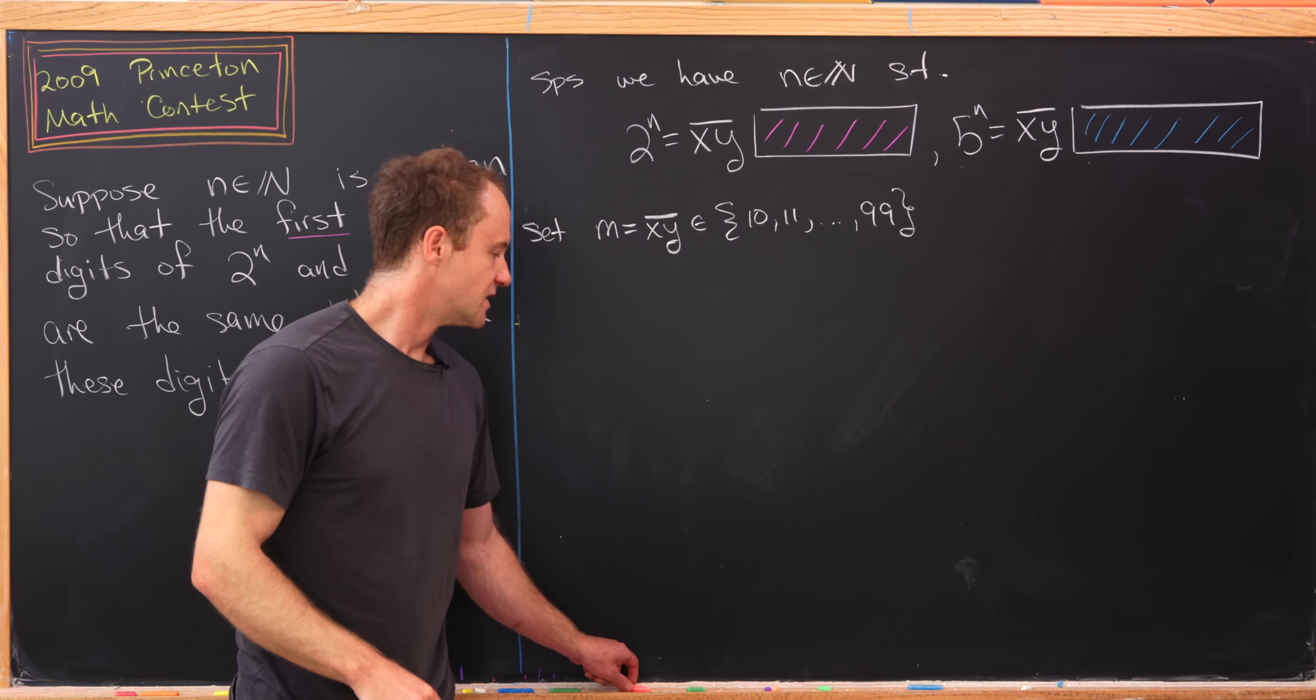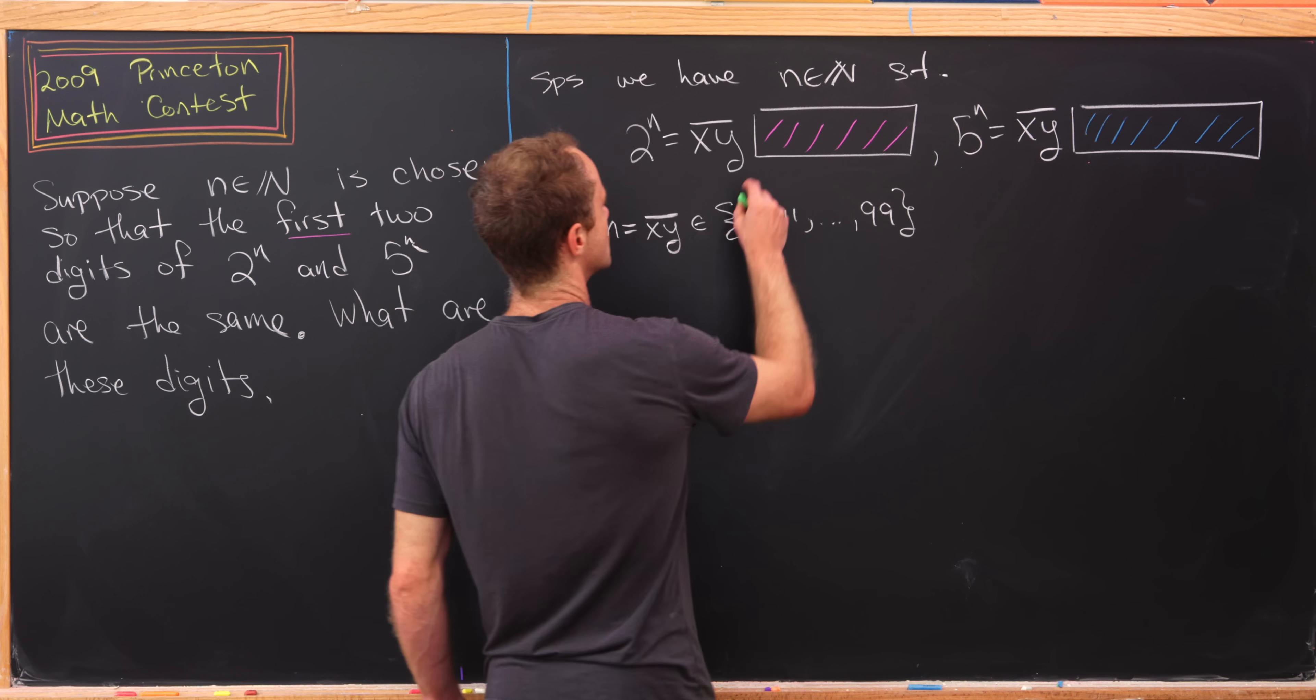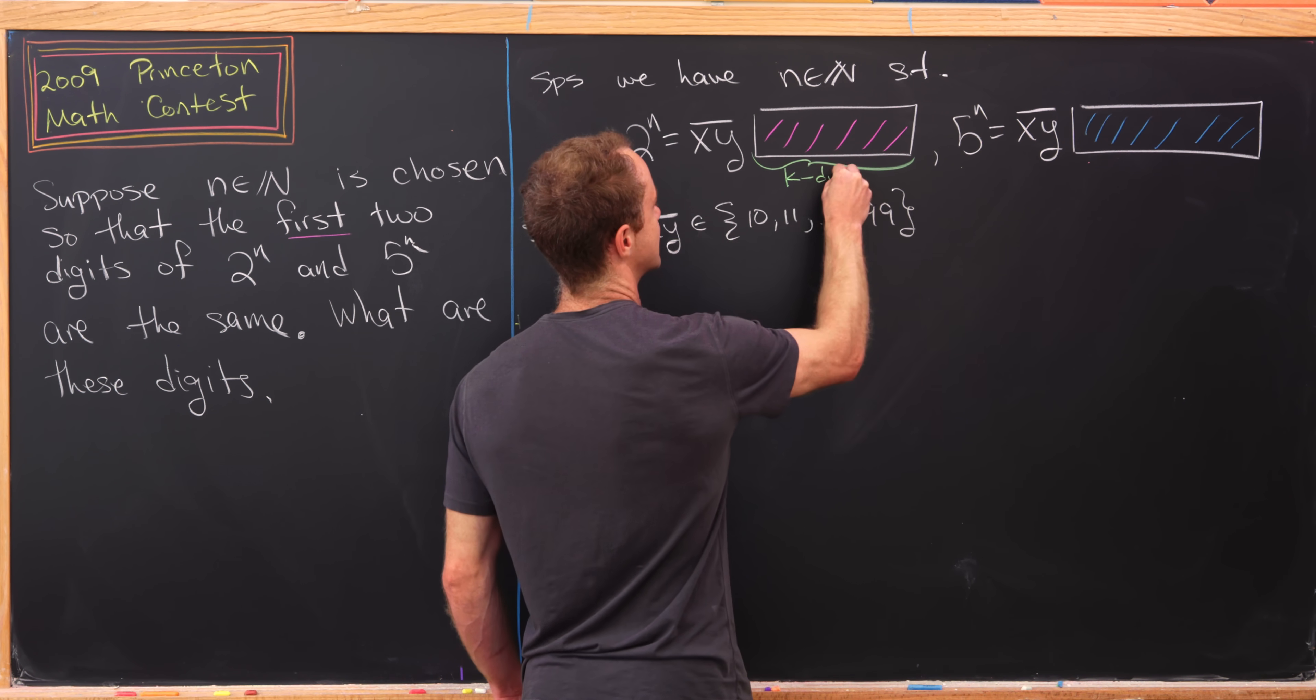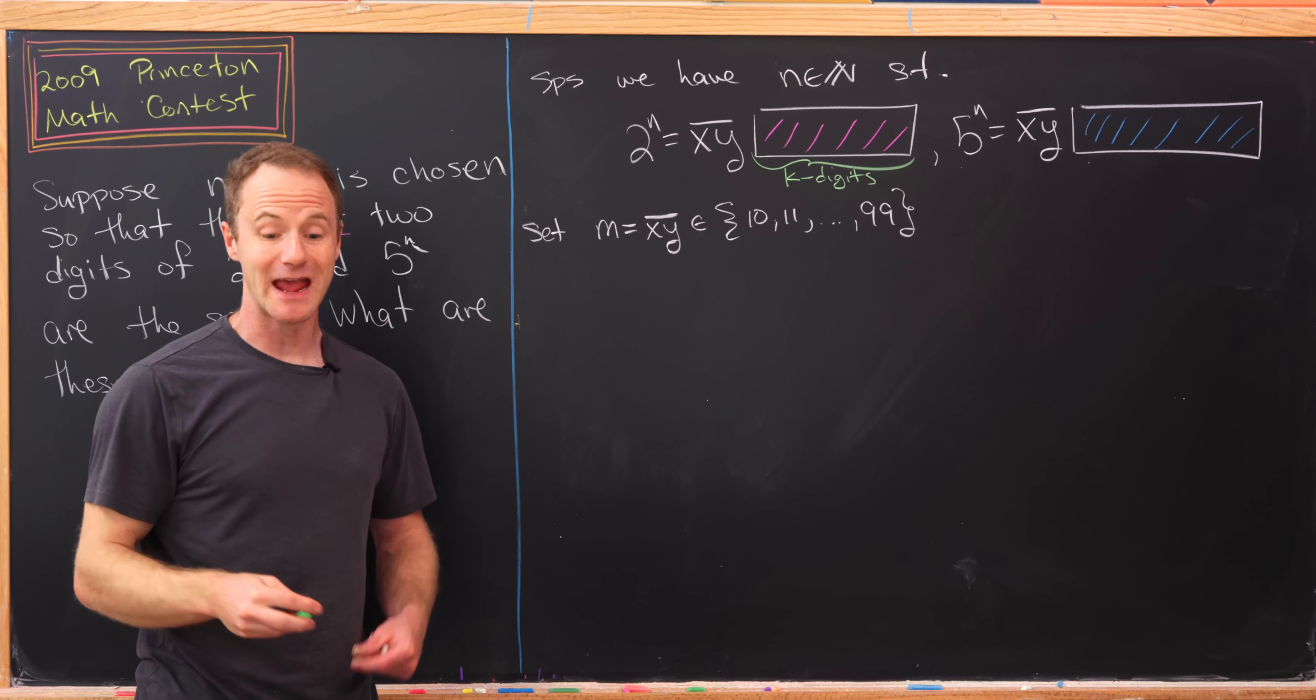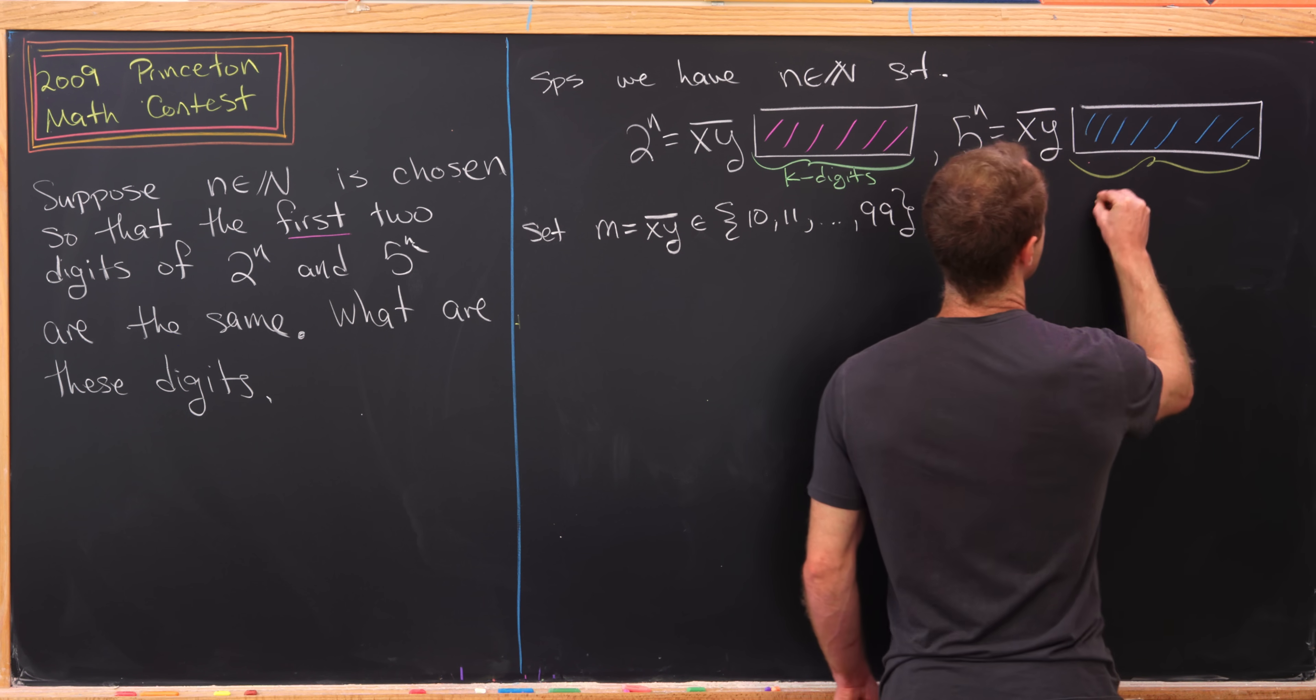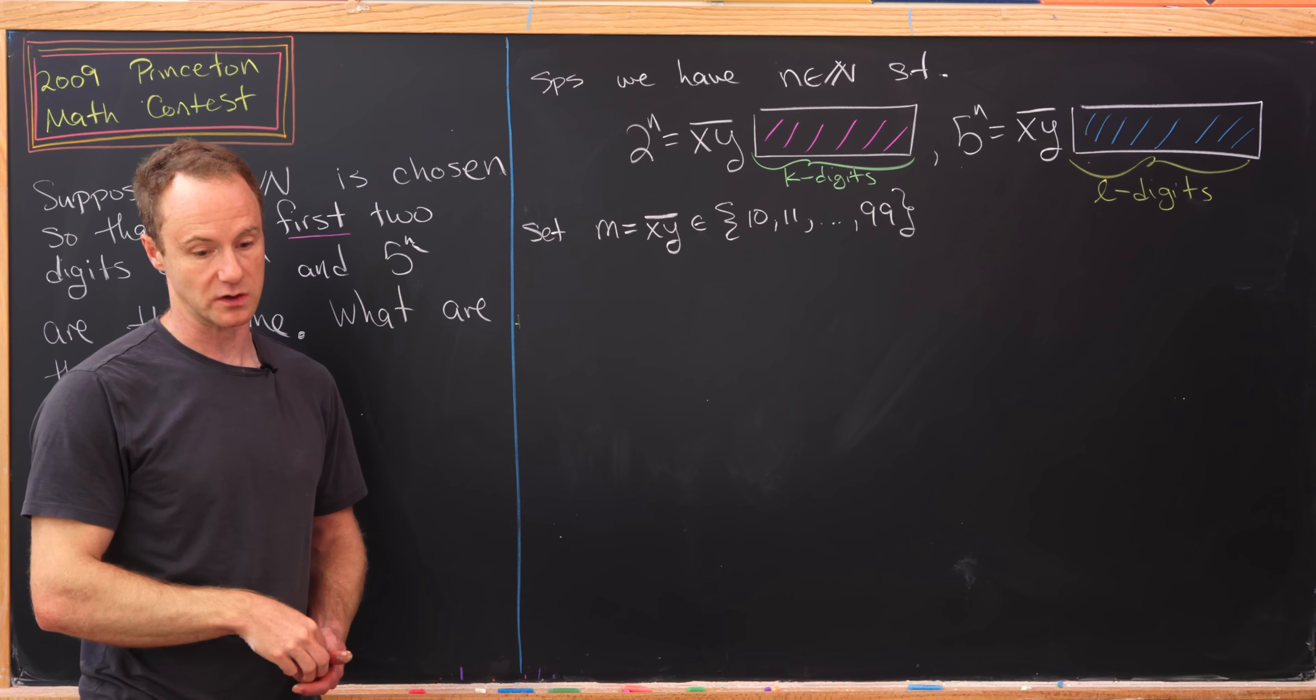Next up, what we'd like to do is get a handle on the size of these trailing digits. Let's suppose in the 2^n expansion there are k trailing digits, so after the first two. In other words there are k+2 total digits. Then let's suppose in the expansion of 5^n there are l trailing digits, so there are l+2 total digits.